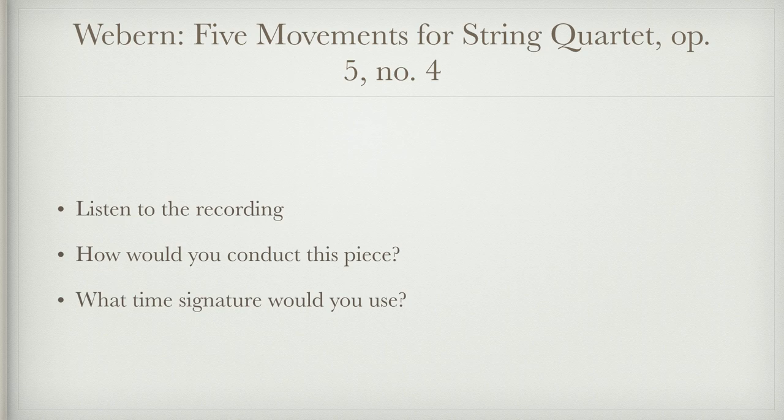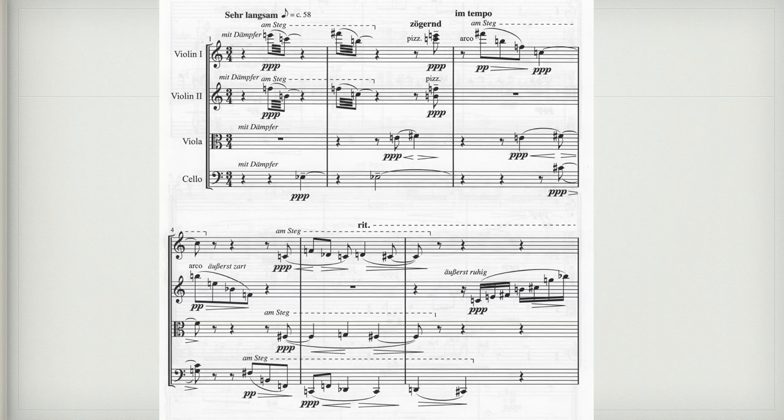The idea is: how would you conduct this piece if you didn't have the notation? You wouldn't necessarily know how to do it or what time signature to use. The notation doesn't always match what we hear. Some people might conduct it in 4, others in 2, but this piece is actually in 3/4, so a conductor would likely conduct it in 3 — but we wouldn't know that without the score.